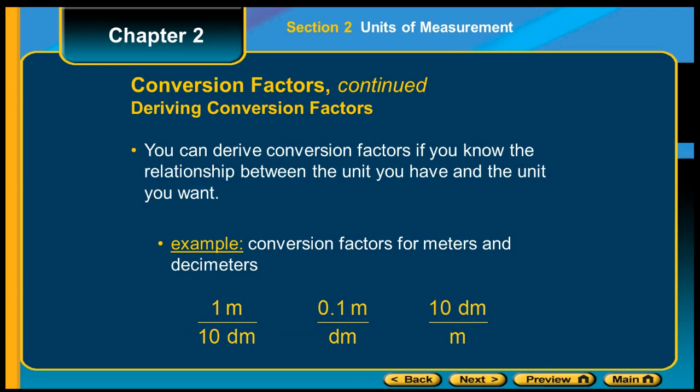You can derive conversion factors if you know the relationship between the unit you have and the unit you want. You can do it from meters and decimeters. One meter is 10 decimeters, 0.1 meter is a decimeter, or 10 decimeters in one meter. They're all the same.